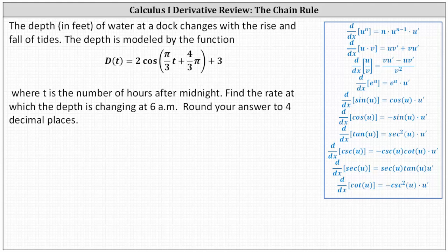The depth in feet of water at a dock changes with the rise and fall of tides. The depth is modeled by the function d of t equals two times cosine of the quantity pi divided by three times t plus four-thirds pi, plus three, where t is the number of hours after midnight. Find the rate at which the depth is changing at 6 a.m. Round your answer to four decimal places.